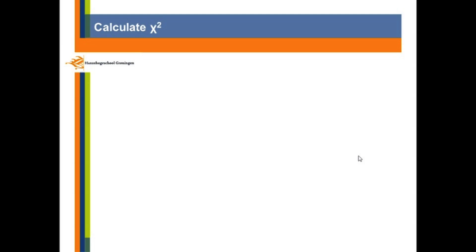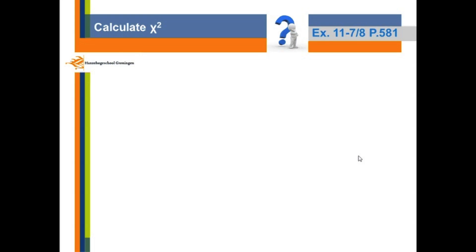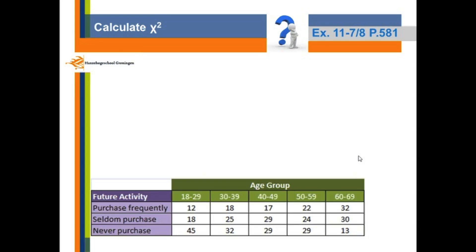Now we can go on to calculate our chi-square. Let's look at one question on page 581. That's a combination of 11.7 and 11.8. From the question, we can read the information as shown in this contingency table. We have 5 age groups and 3 future activities: purchase frequently, seldom purchase, never purchase. This contingency table is a 3 by 5 table, because we have 3 rows and 5 columns.